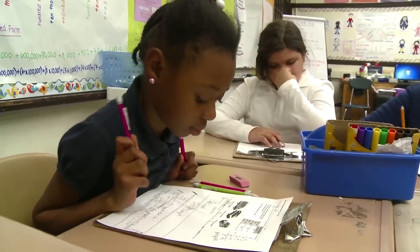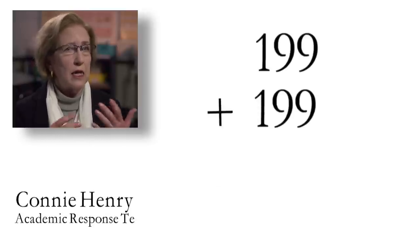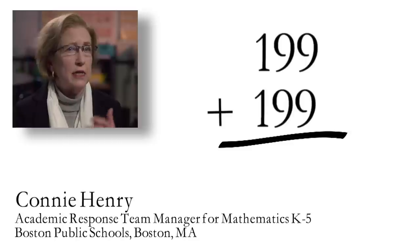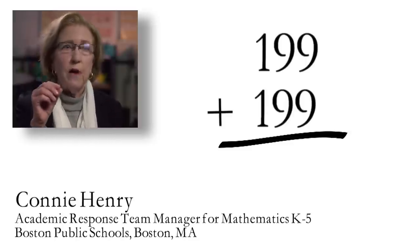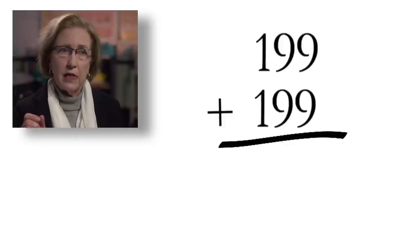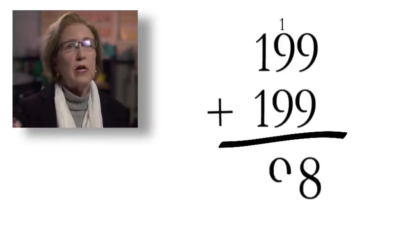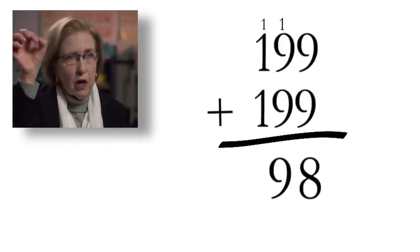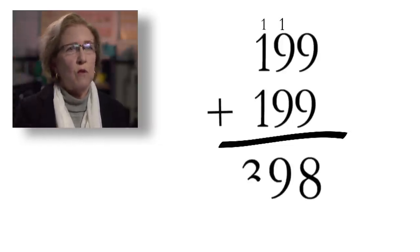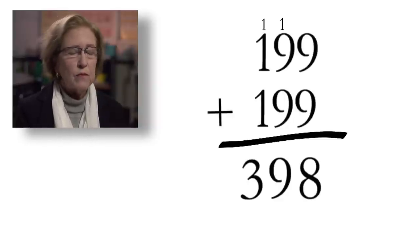Is it a 10 or is it a 1? If you think about the problem 199 + 199 + 199 + 199, you can set it up as a standard algorithm, line them up neatly, add the 1's first — 9 plus 9 — and make a little mark for the 1 you carry from 18, which isn't actually a 1, it's a 10.